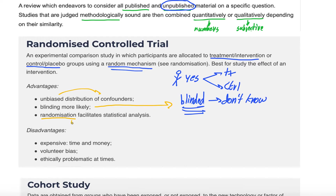Blinded randomized control trials are of high value. Advantages include being unbiased because patients are randomly assigned, blinding removes bias and confounding variables, and randomization facilitates statistical analysis. You might ask: can't you just manually match groups? You can match for known confounders like comorbidities, age, and sex, but the challenge is that randomization allows matching even for confounders we're not aware of — things that might be affecting disease outcomes that we don't yet know about.